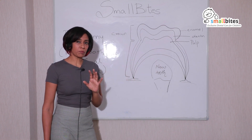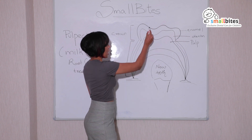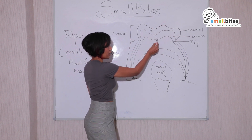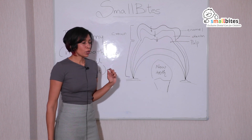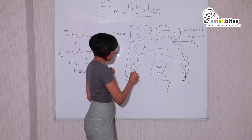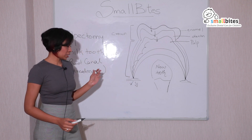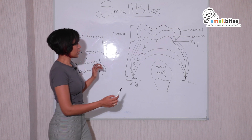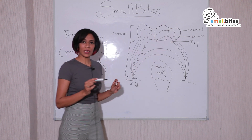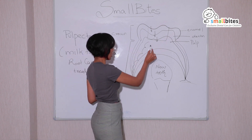Pulpectomy is basically required when the infection or the cavity has crossed through your enamel, crossed through your dentine and reached the pulp. So what happens is the bacteria have free access into the root and sometimes even beyond. So when we do a procedure called pulpectomy, what we do is we clean the cavity first and then with our very fine instruments called dental files, we clean the tooth up to the root.